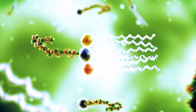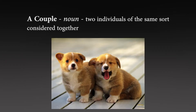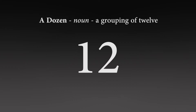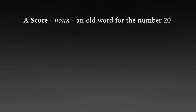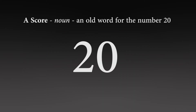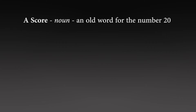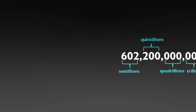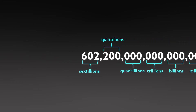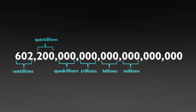For instance, a couple means two things. A dozen means 12 things, like a dozen donuts. A score means 20 things, so a score of cars would be 20 cars. A mole is 602.2 sextillion things.